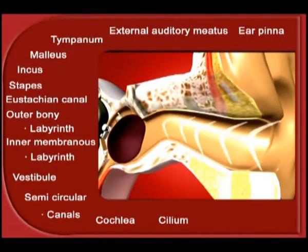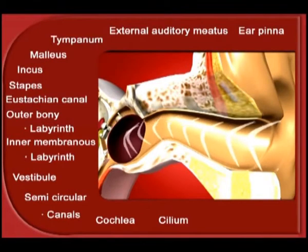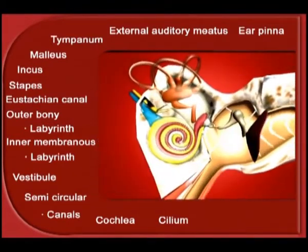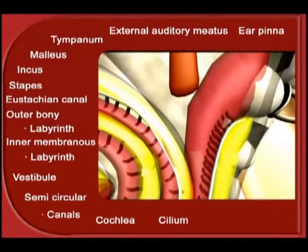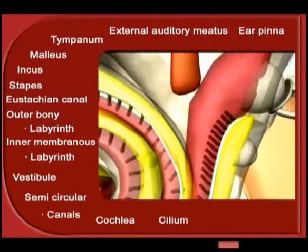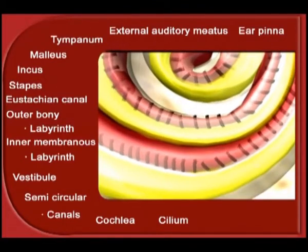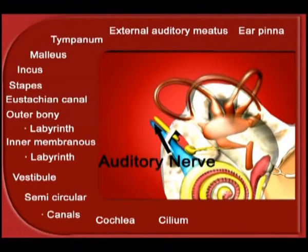These receptor cells at the base are connected to nerve fibers. The external ear concentrates the sound waves through the external auditory meatus to the tympanum. The tympanum vibrates and transmits these waves to malleus, then to incus, and then to stapes. From stapes, these vibrations are made to fall onto the endolymph of the inner ear. These vibrations move the cilia in the endolymph, and movement of cilia generates an electrical impulse in the ciliated cell. This electric impulse is sent to the brain through the auditory nerve.